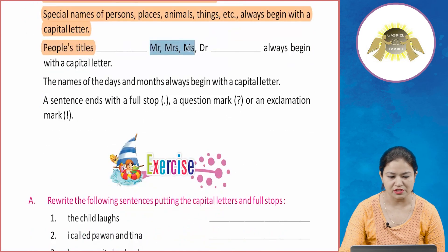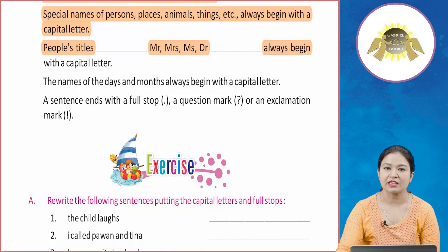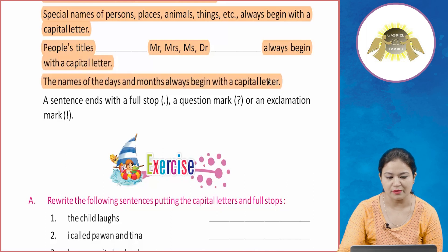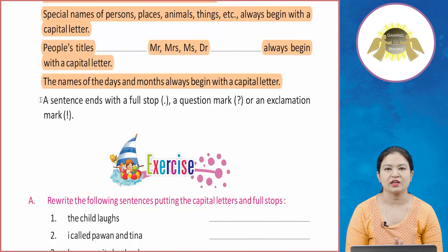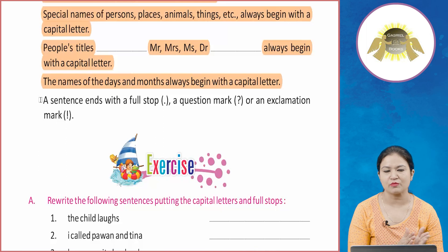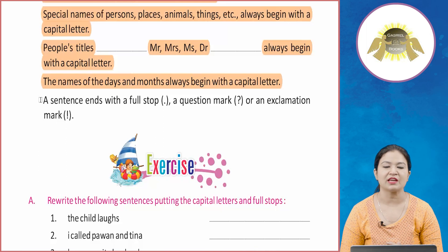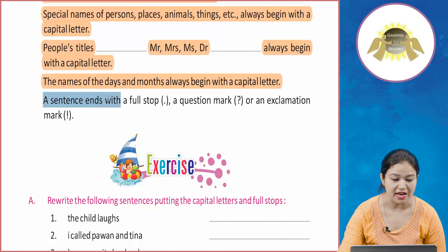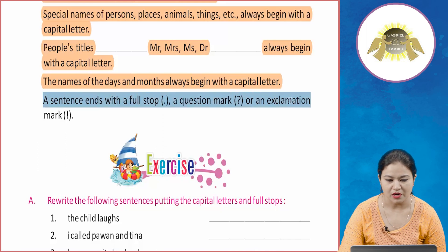People's titles such as Mr., Mrs., Miss, and Dr. always begin with a capital letter. The names of days and months also always begin with a capital letter — for example, January, February, Sunday, and Monday all start with a capital letter.